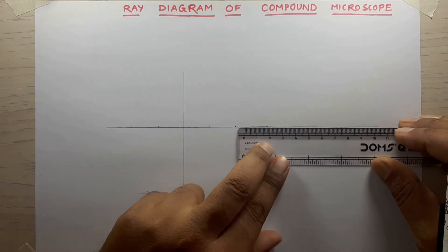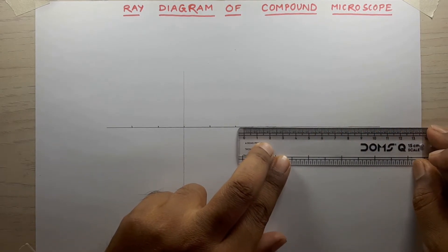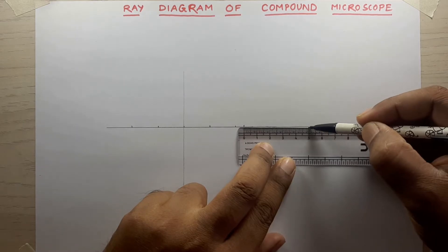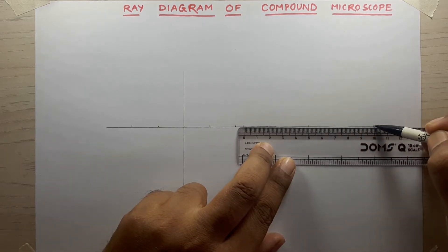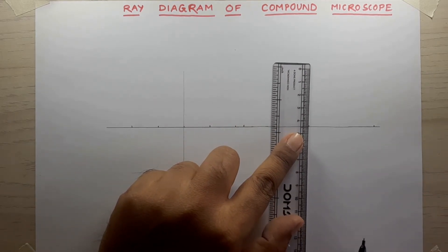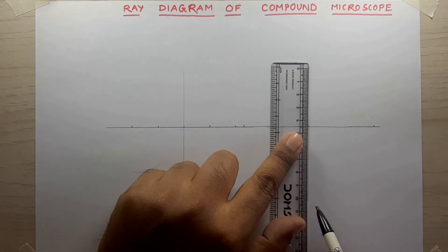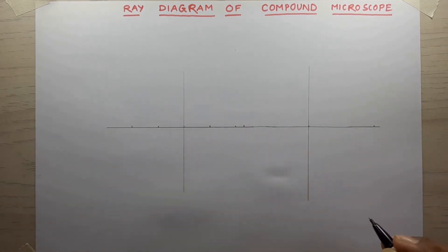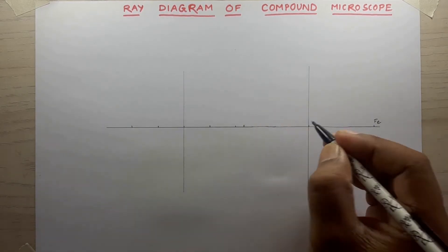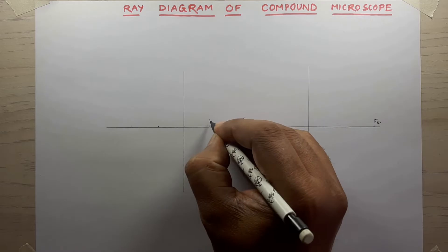Now on the same line I will create marks at 5 centimeters each: 0, 5, and 10. That will be the points of the eyepiece. At 5 centimeters this will be its focal length, so the focal length of the eyepiece is between those two points, and the focal length of the objective is this point and this point.